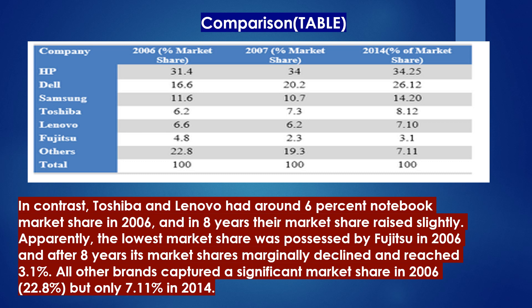In contrast, Toshiba and Lenovo had around 6% notebook market share in 2006 and in eight years their market share raised slightly. Apparently, the lowest market share was possessed by Fujitsu in 2006 and after eight years its market share marginally declined and reached 3.1%. All of the other brands captured a significant combined market share of 22.8% in 2006, but only 7.11% in 2014.